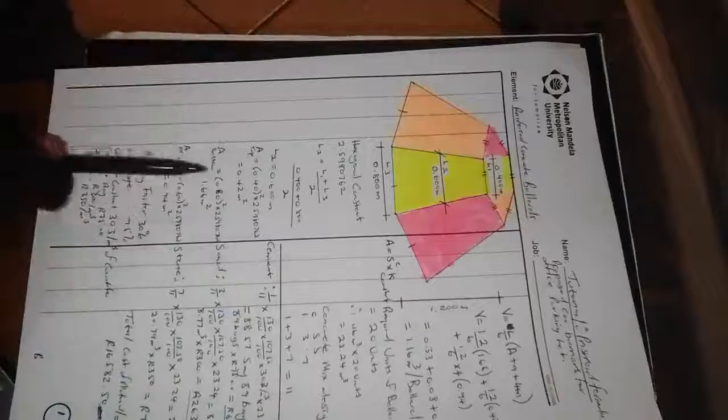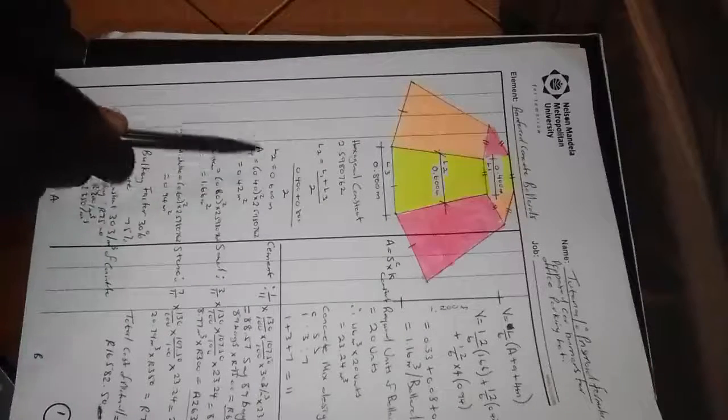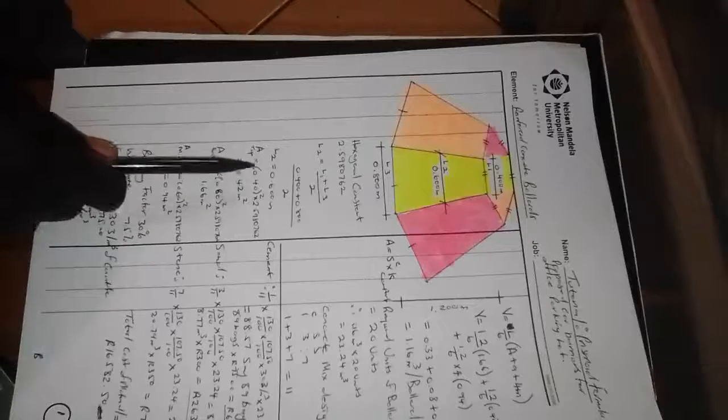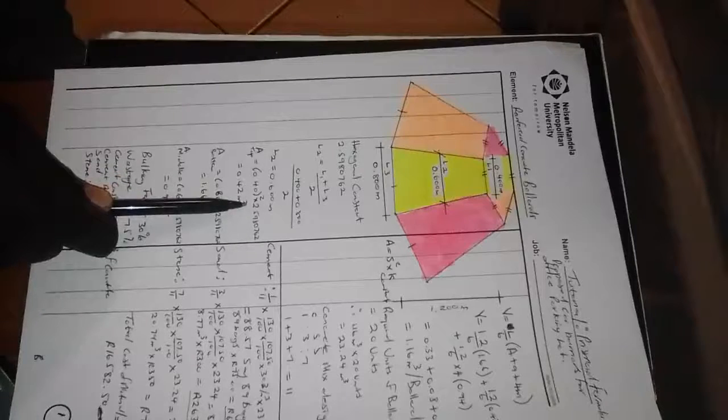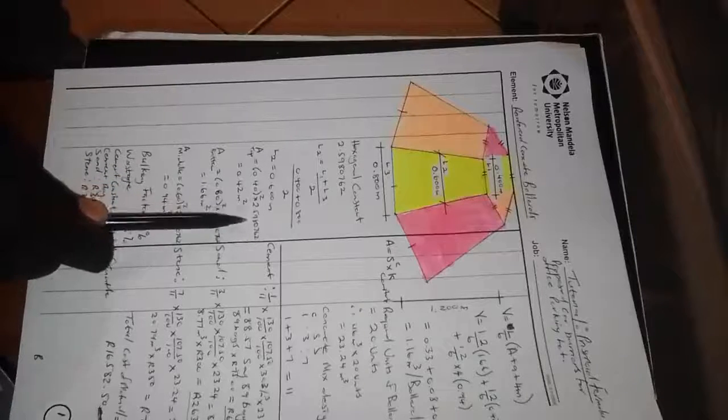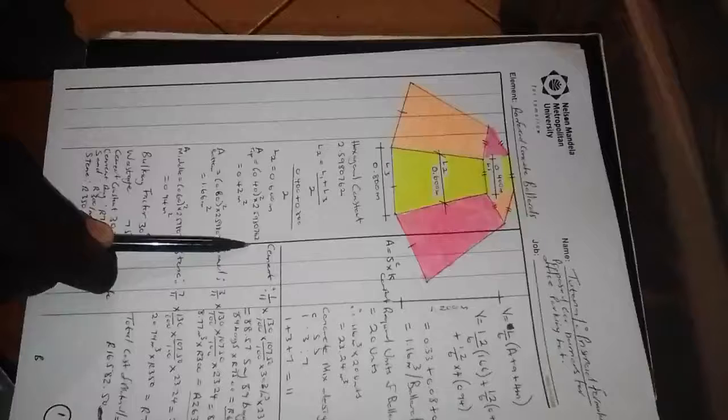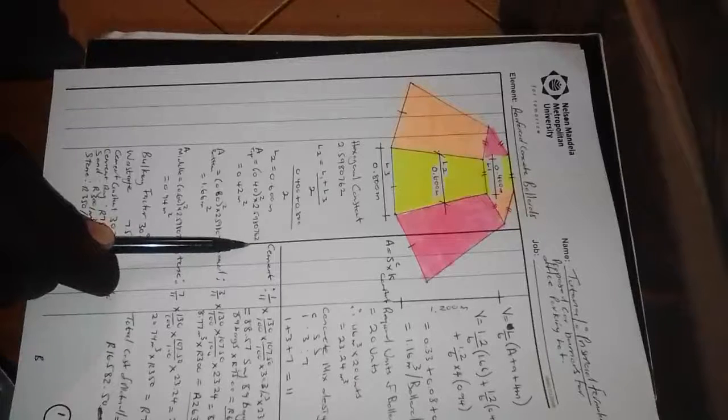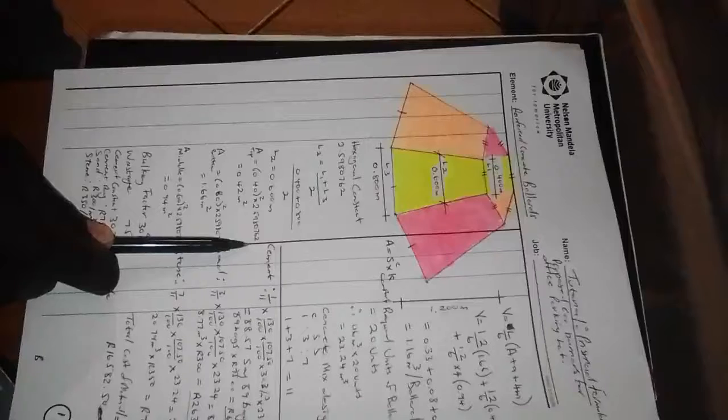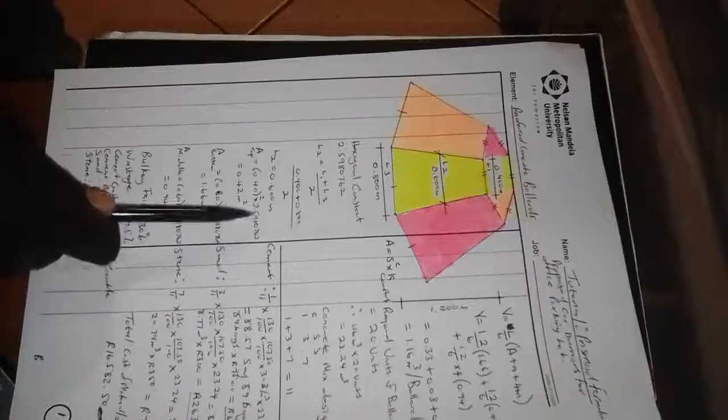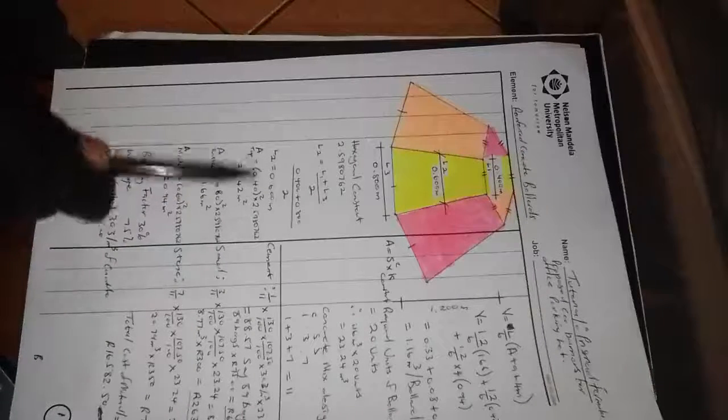Now we can proceed to calculate the areas. Let's first start with the area on top. We say area is equal to side squared times constant. So 0.4 squared times the constant which is 2.5980762, and that is specific for a hexagon, for a sixth shape structure that has the same size, equal size.